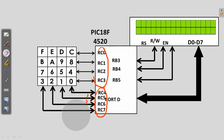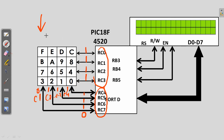After initialization, I will write 1 to all 4 rows and for the columns: for column 1 (C1), I will write 0, and for C2, C3, and C4, I will write 1, 1, and 1. Only C1 is 0. When I write 0 to C1, I am considering only C1 for this first iteration — meaning only these 4 pins: F, B, 7, and 3. I am not considering the remaining 12 keys.